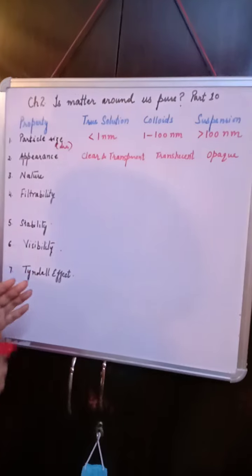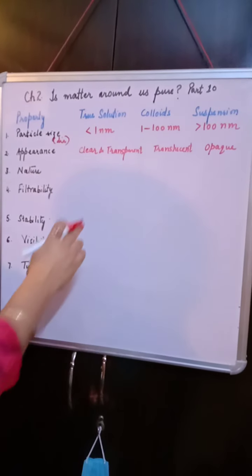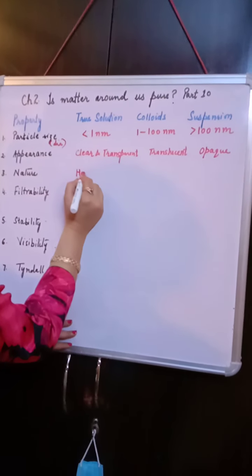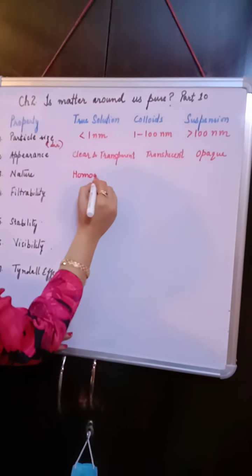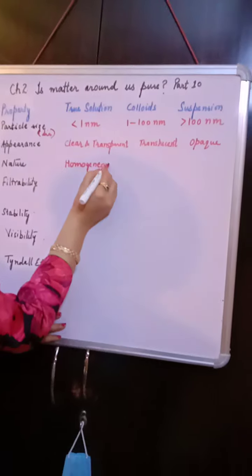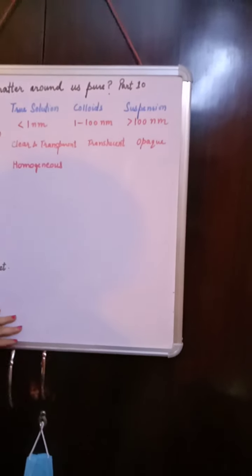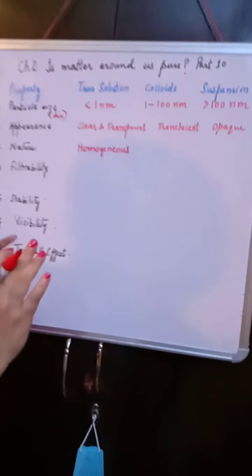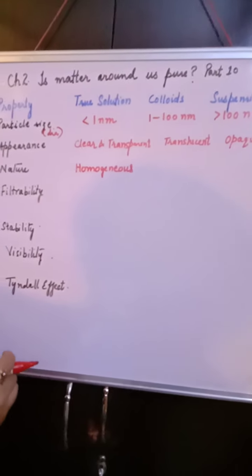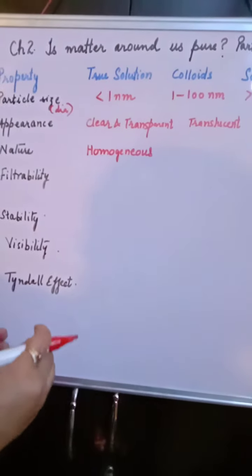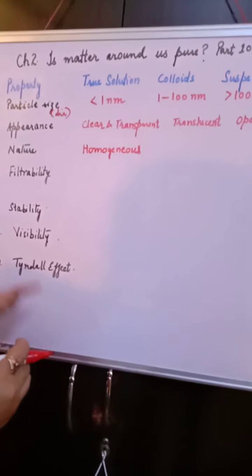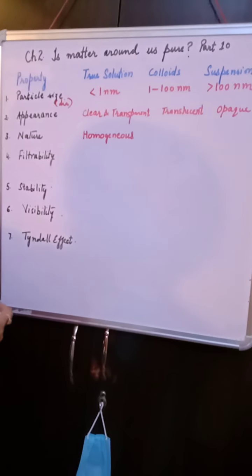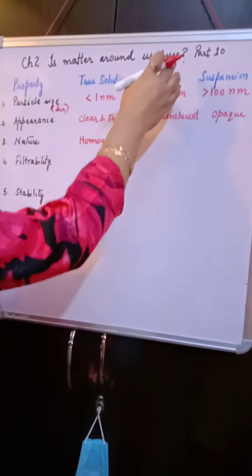Regarding nature, when we started the chapter we classified mixtures into two categories: homogeneous and heterogeneous. True solutions are homogeneous mixtures — the solute particles are so thoroughly and uniformly mixed with the solvent that you are unable to locate individual particles.